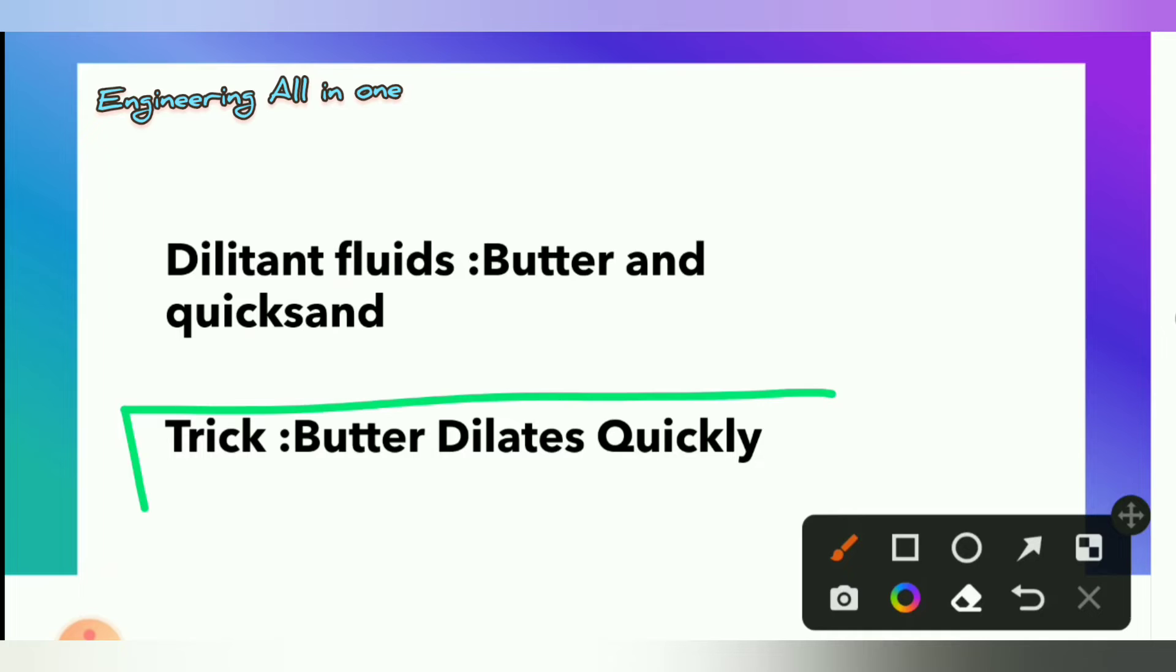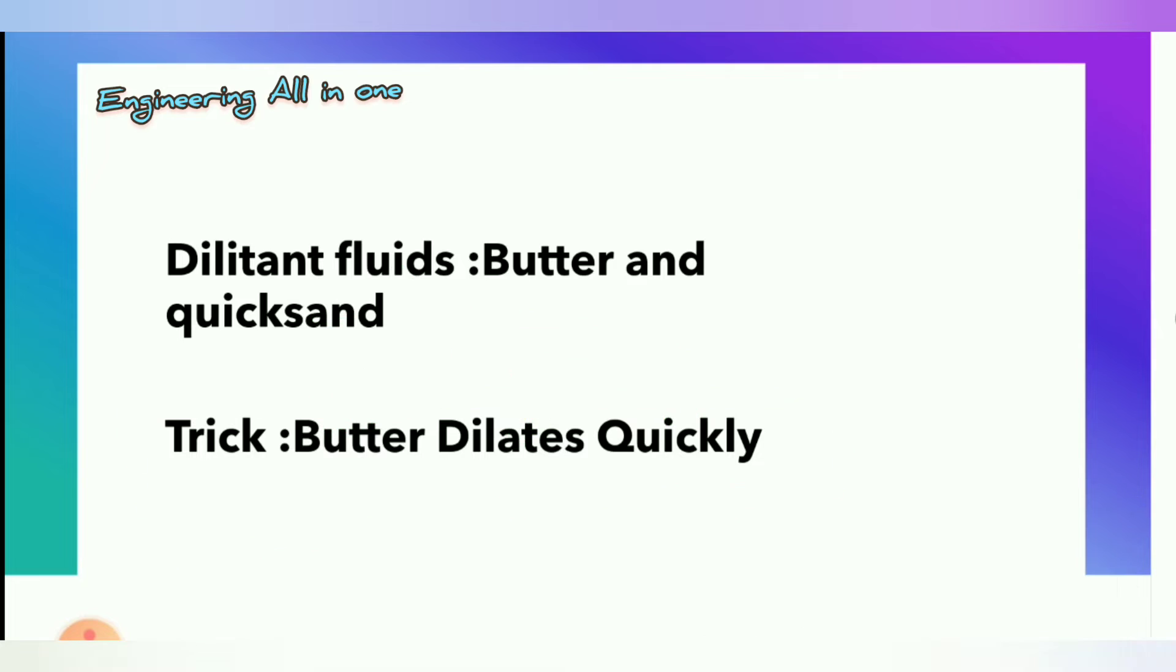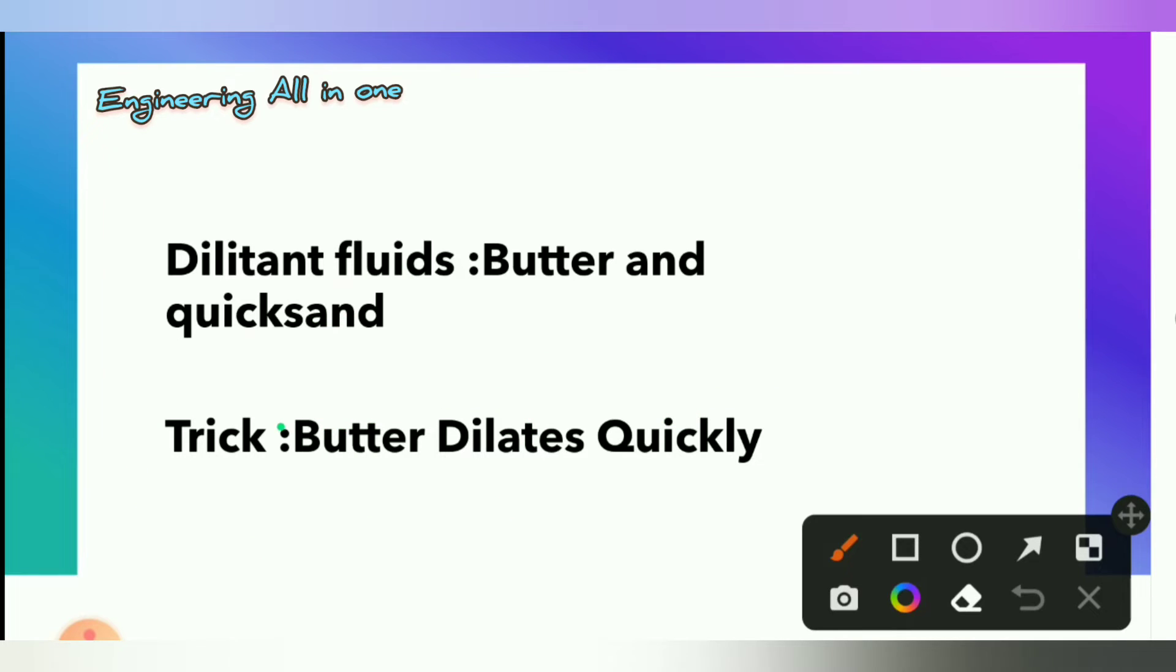See here. Butter dilates quickly. The dilatant word here is dilate. Butter is here and quicksand is quickly. So we can remember this sentence. Butter dilates quickly. This is the type of non-Newtonian fluid and these two are the examples.